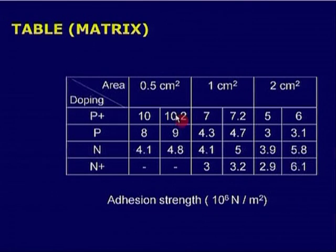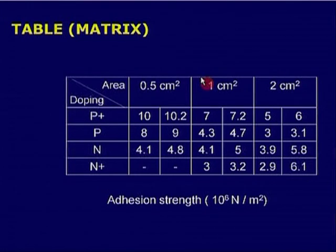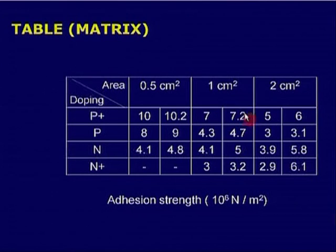Since the experiment is repeated twice, the second value is shown adjacent. This form of table reveals patterns very easily. For instance, to see the pattern as a function of area, I go to the P plus substrate row and find that as the area increases, the adhesion falls — from 10, to around 7, to about 5.5. The adhesion is clearly decreasing as area increases.